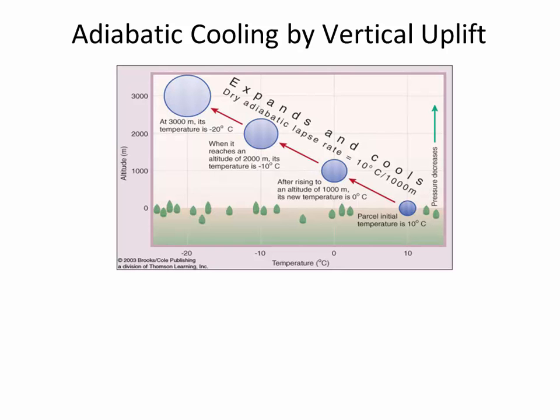Student question: Is dew point the same at ground level as it is up in the air? Dew point is a function of how much moisture can be held by air at a certain temperature, so the dew point aloft is different because the air is cooler up there. The air aloft is generally cooler than air at ground level, though there are sometimes inversions where warm air is up above, which traps cold air beneath and can cause a lot of air pollution. But in general there's a cooling trend, so the dew point is different aloft.